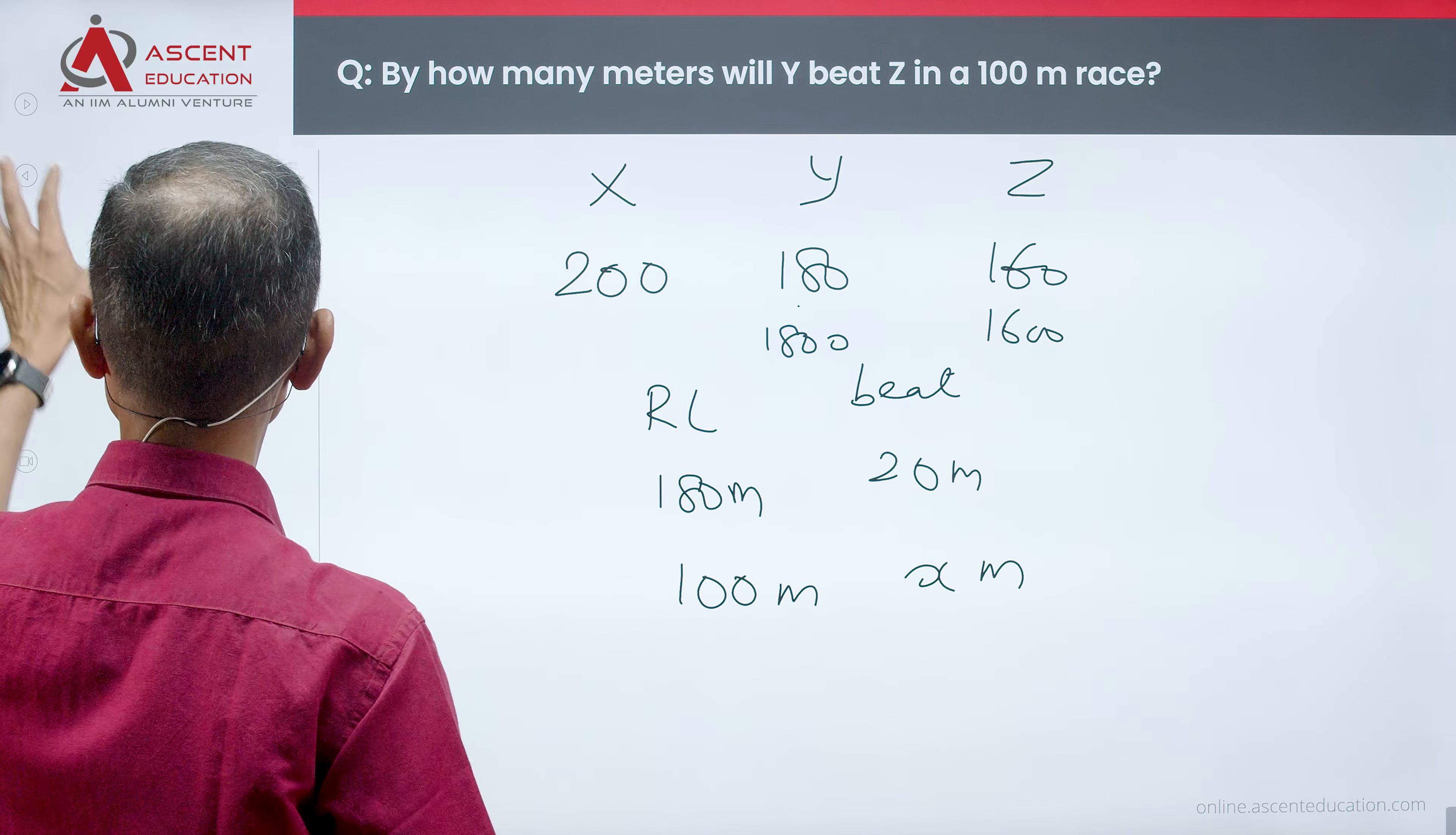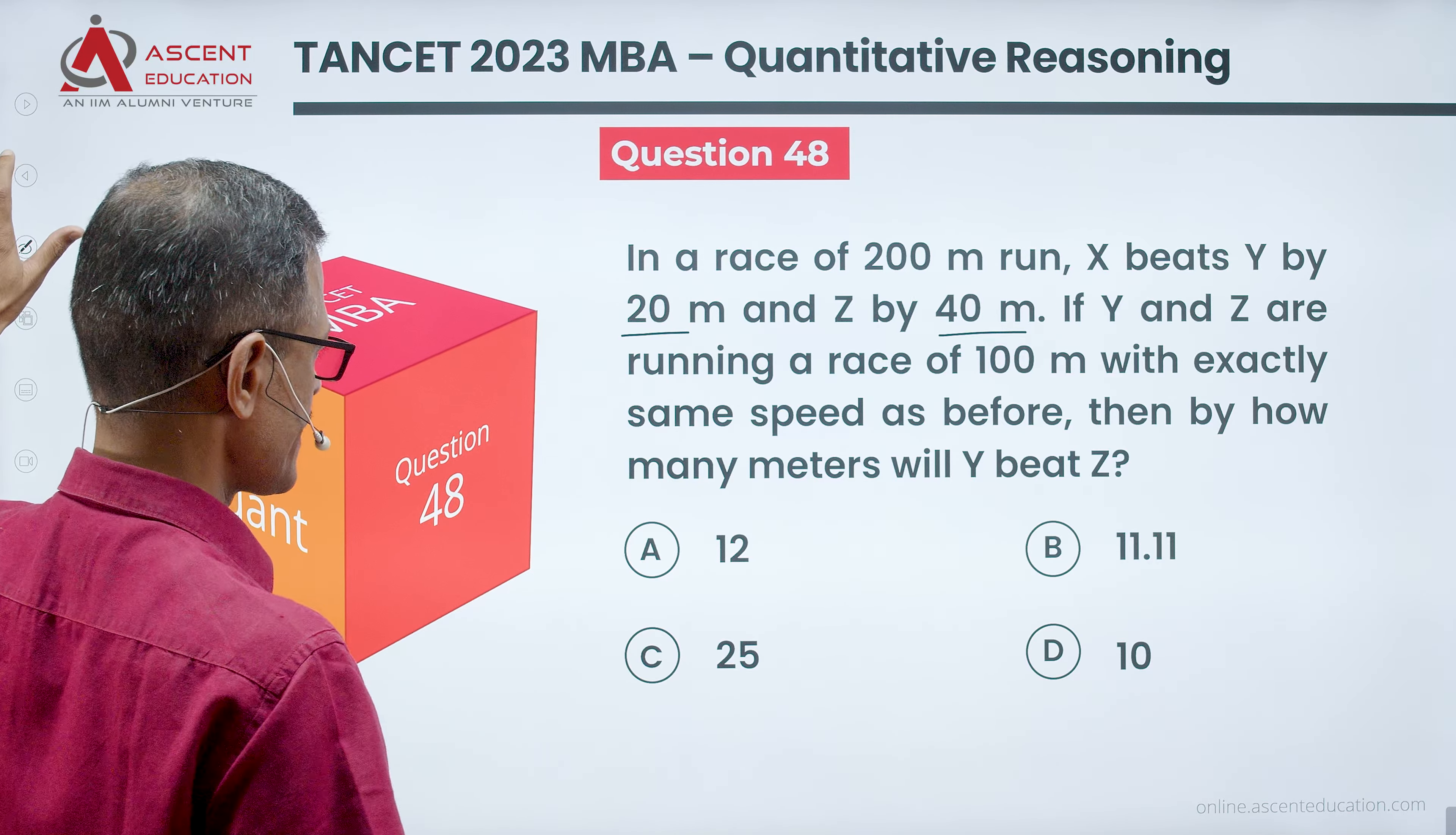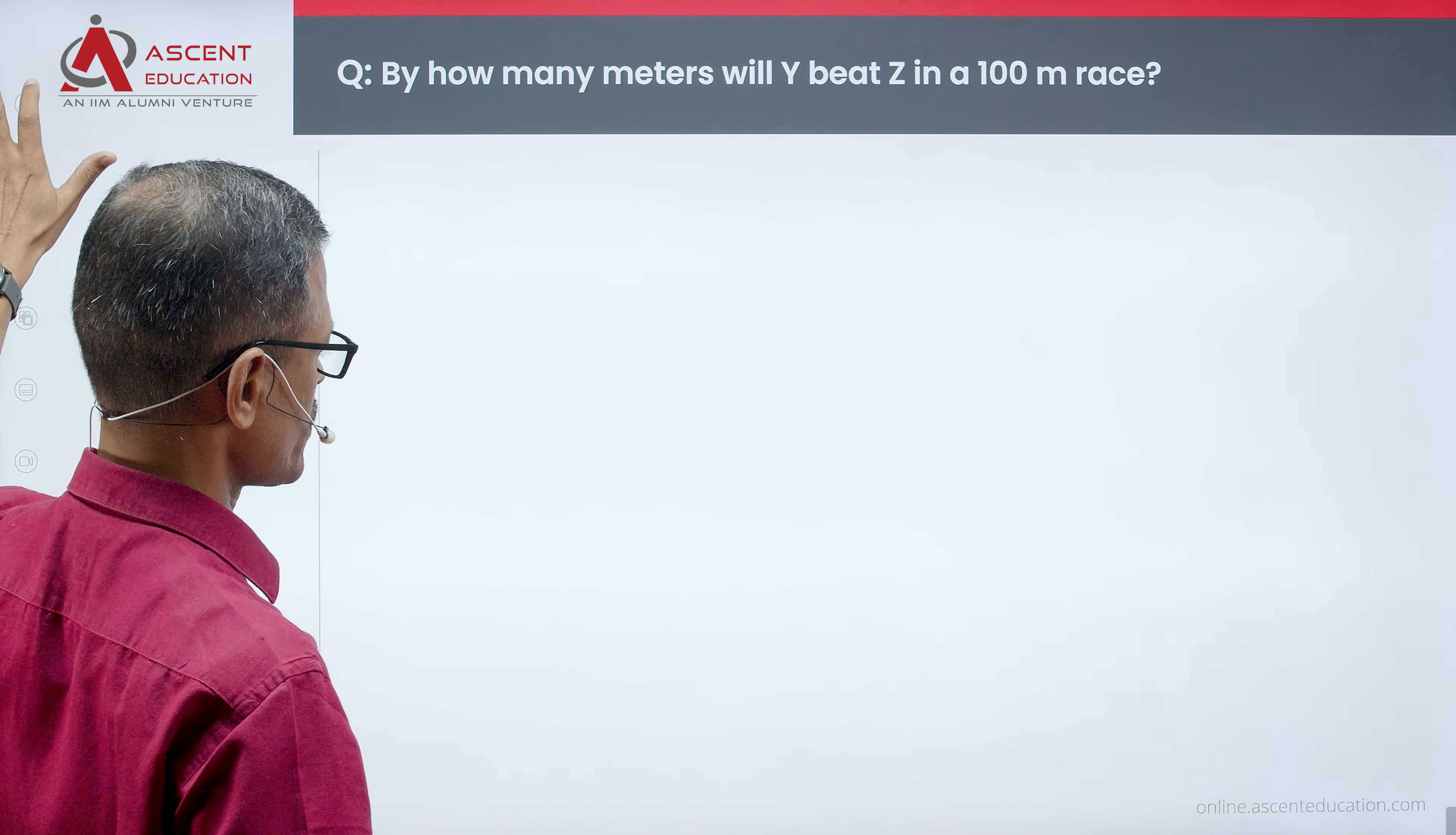As the race length and the distance that they beat by are proportional, directly proportional to each other, we can essentially do this and get the answer: 11.11 meters. 11.11 meters is choice B. Choice B is the correct answer to this question.